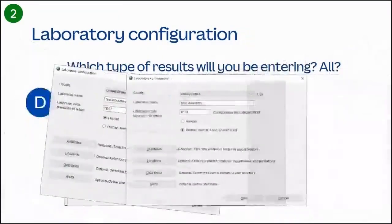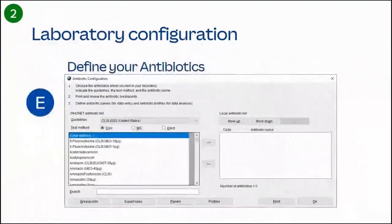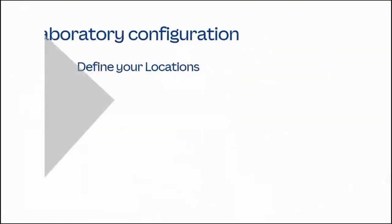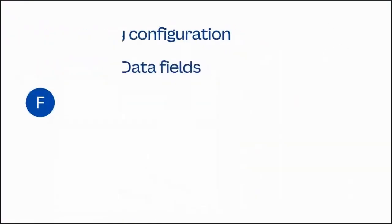Select Human or All Sample Types. This tells Hoonet which data entry form to present to you each time you go to enter an isolate. For field four, Antibiotics, please enter each antibiotic that is tested in your laboratory and tell Hoonet which breakpoints to use.